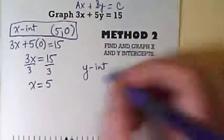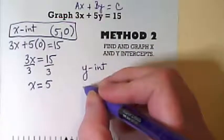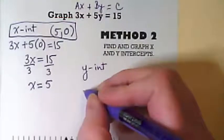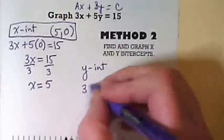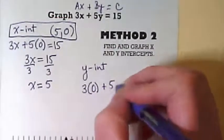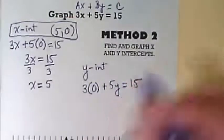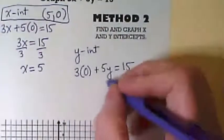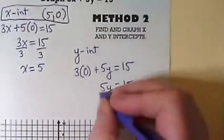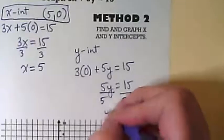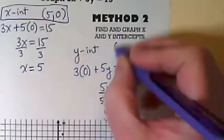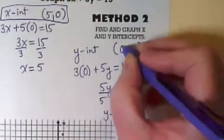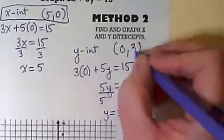Now we're going to find our y-intercept. We're going to rewrite the equation, but this time we're going to plug in 0 for the x. So 3 times 0 plus 5y equals 15. 3 times 0 is, that leaves us with 5y equals 15. So our x-y pair is, we put in 0 for x, and we found 3 for y.